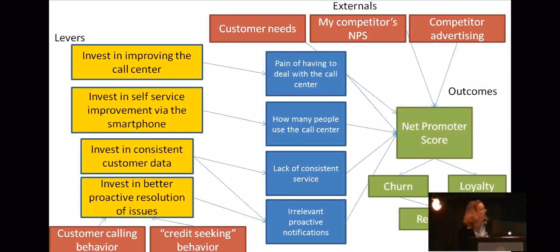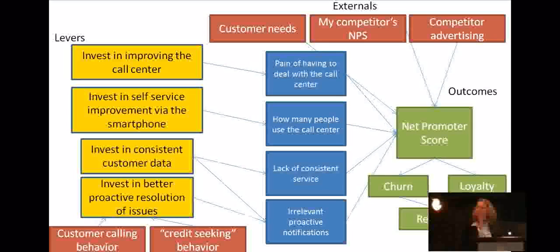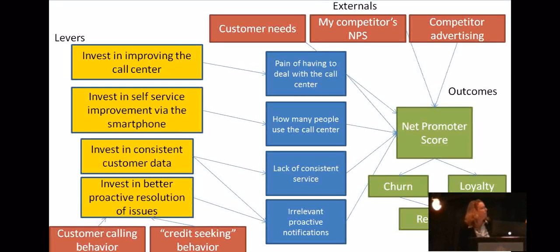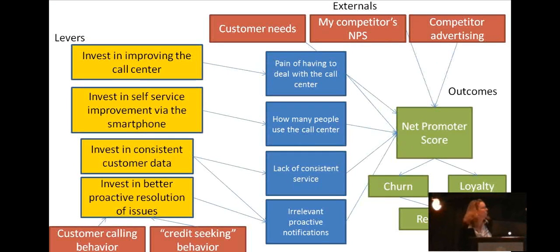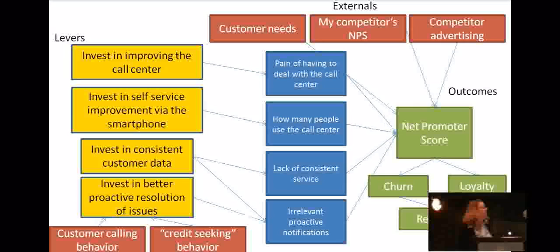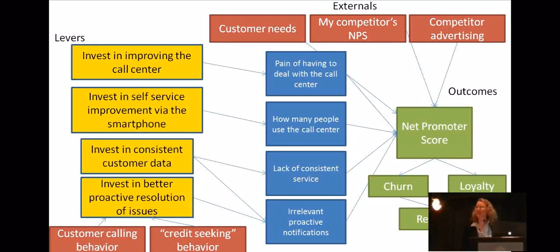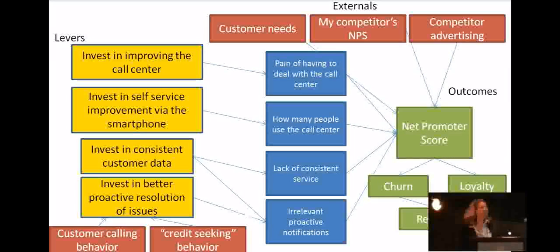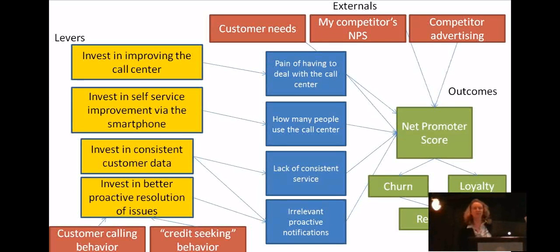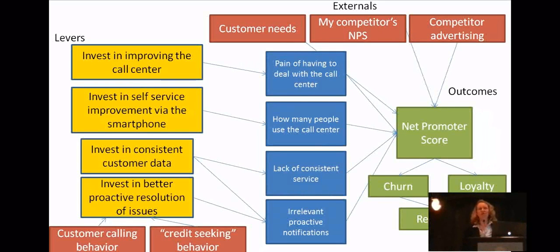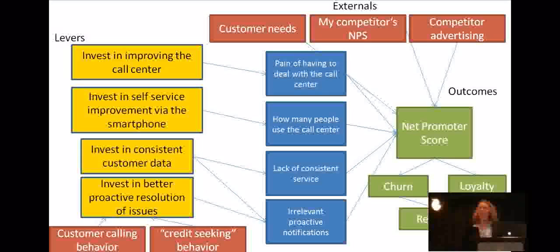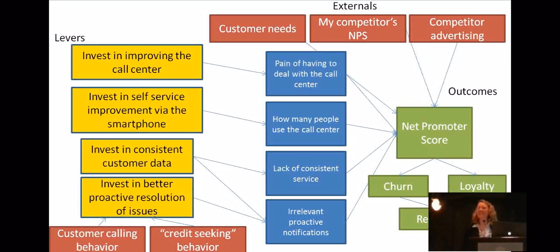And then she said, look, what we discovered through our surveys and research is that in order to achieve a net promoter score, we need to avoid this pain of having to deal with the call center. That's one of the ways you get to that. We need to reduce the people using the call center at all, right? So we're going to have some self-service to achieve that. Lack of consistent service. And what we're looking at here is a structured, what we call decision model, of basically your job. That was my intent. And I didn't check with her beforehand. So I thank you for allowing me.